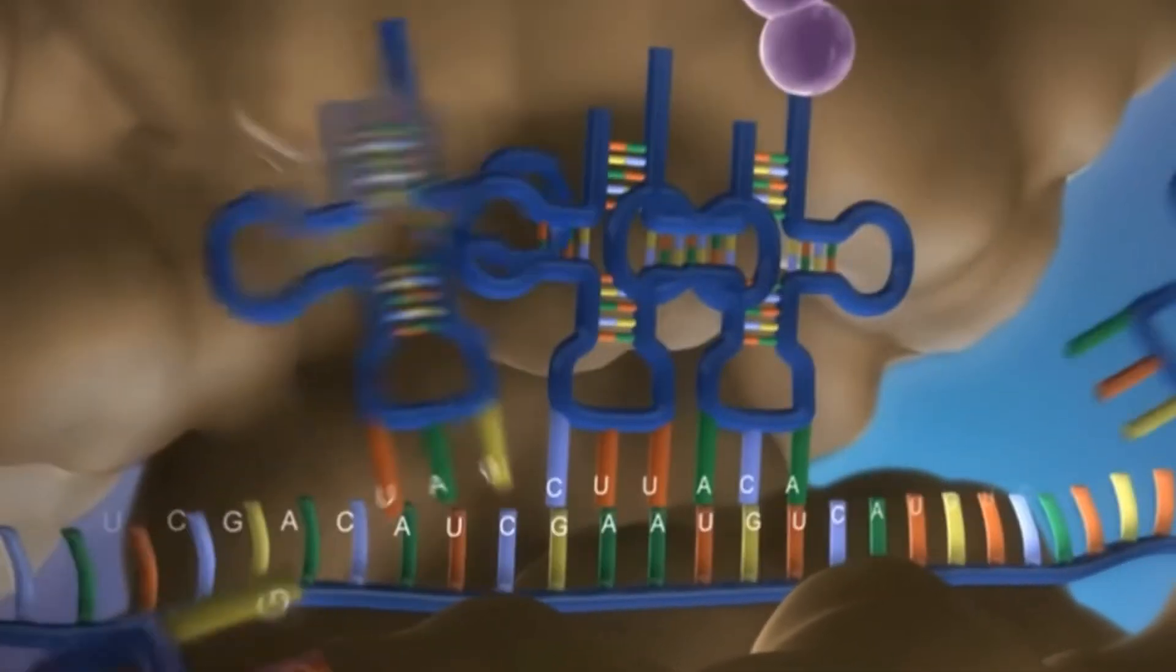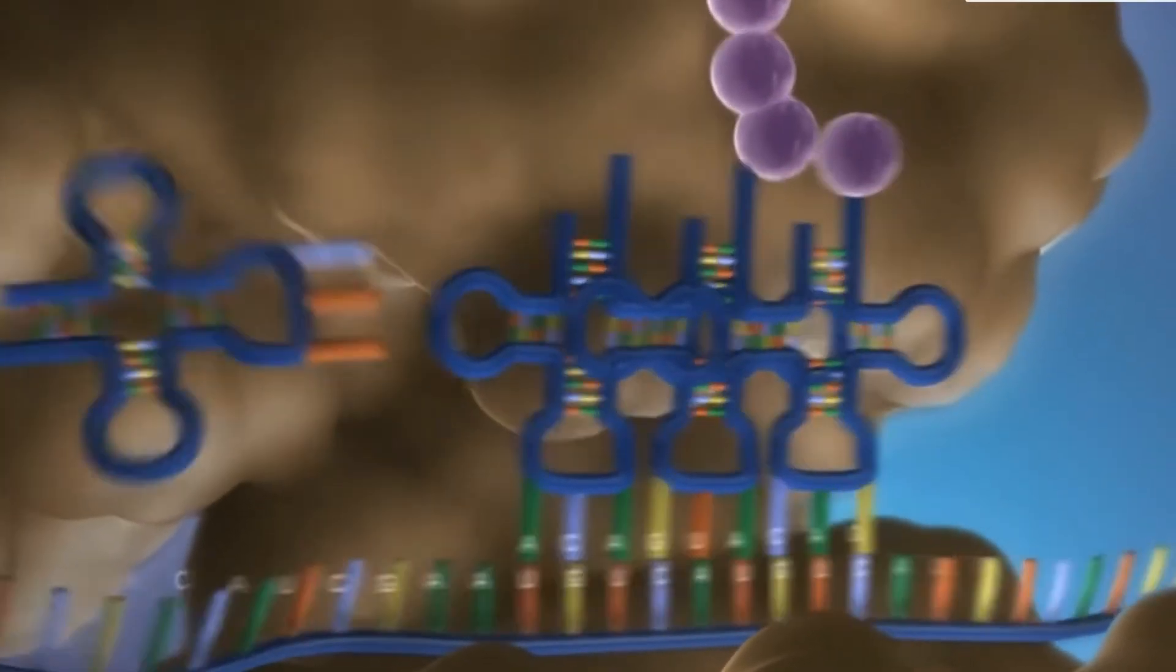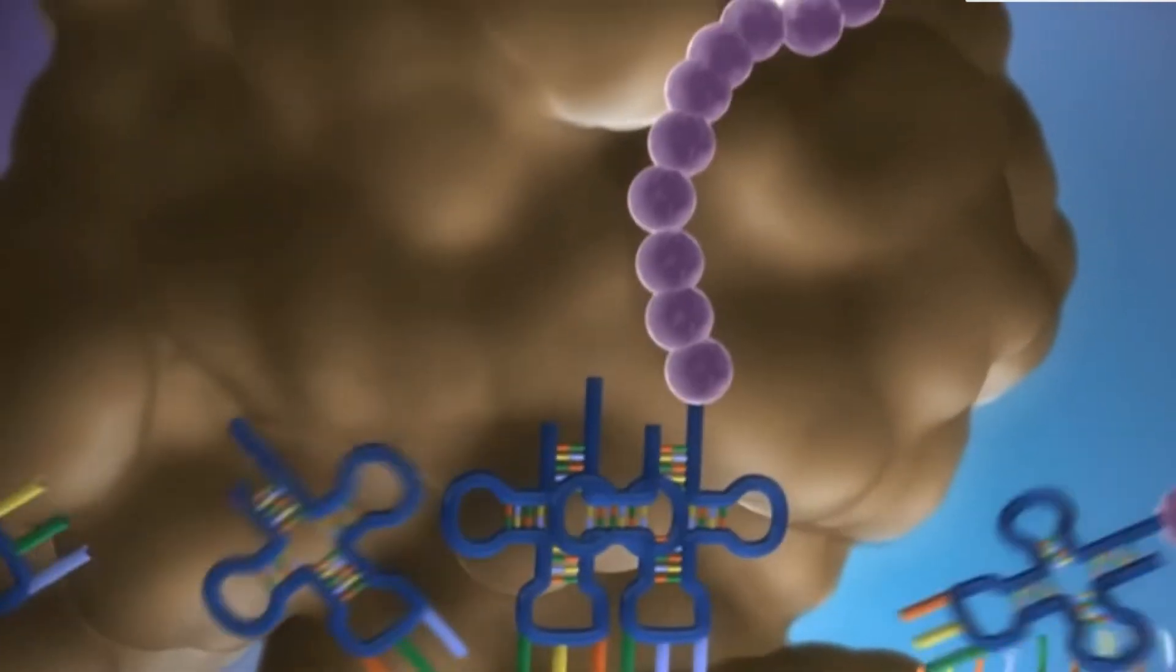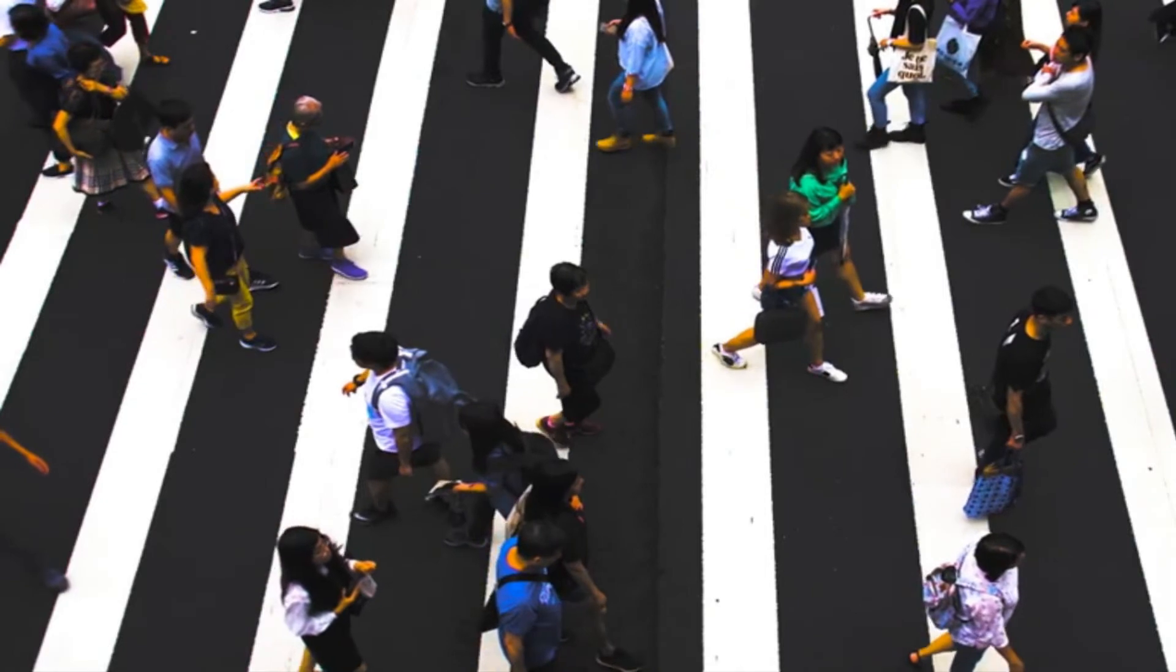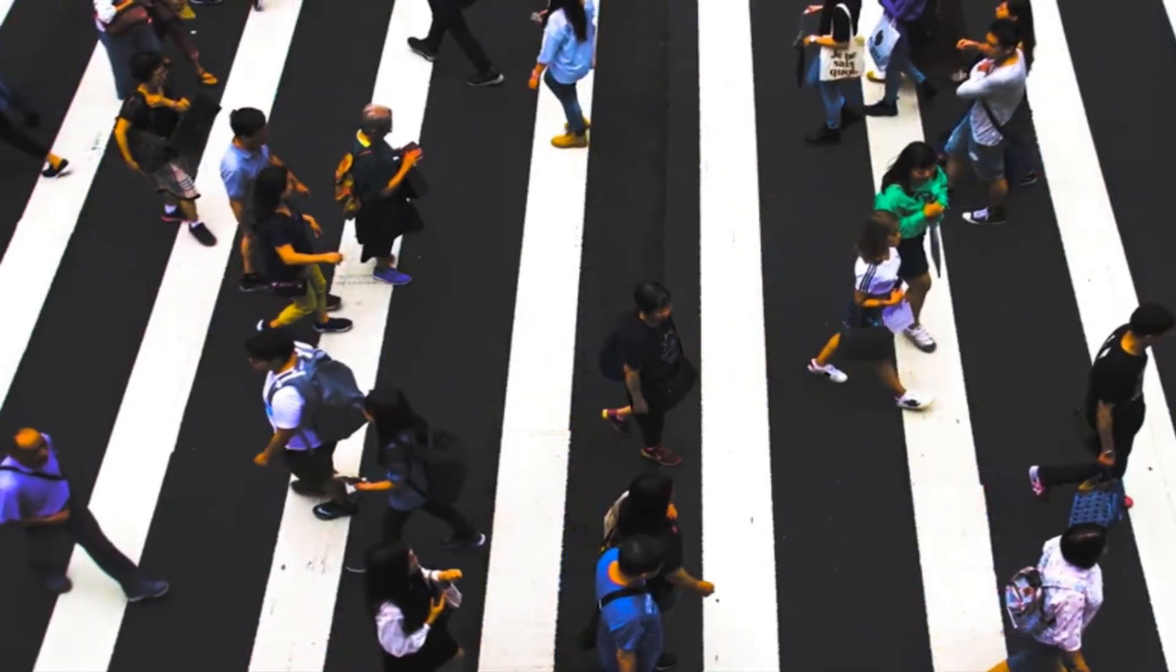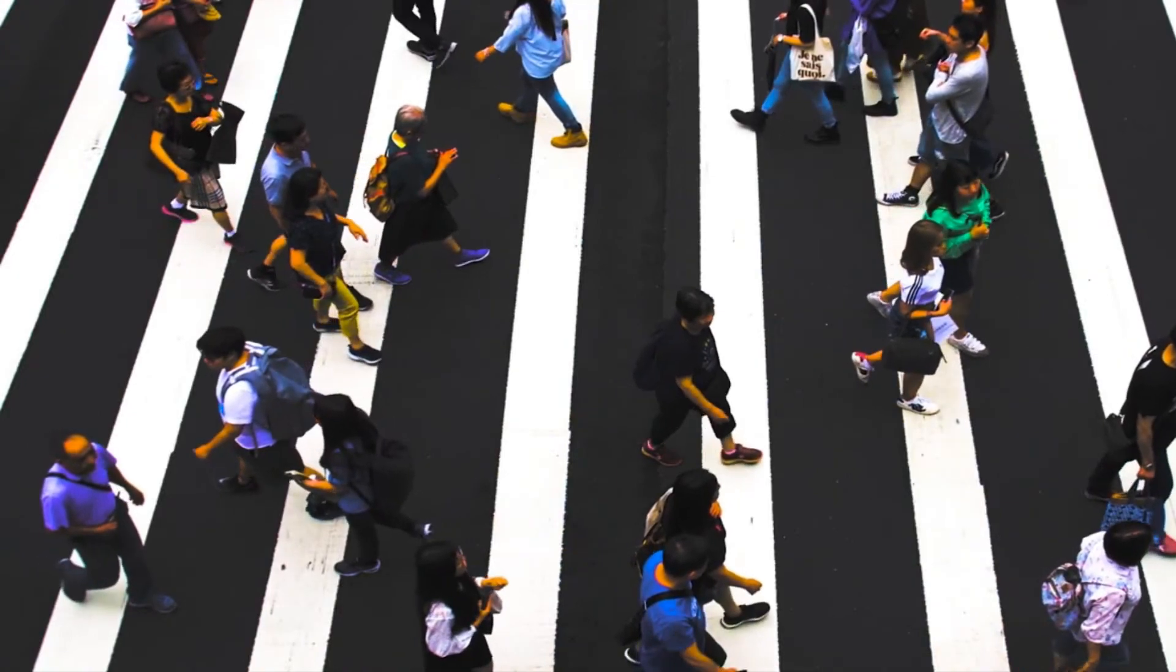It's still unclear how exactly this protein is involved in fingerprint development, a process that happens in the womb. The researchers suspect it might play a role in helping a fetus's skin cells fold over one another, producing a fingerprint's ridges, but further work is needed to test the idea.